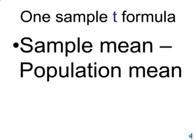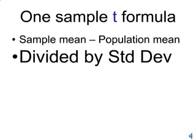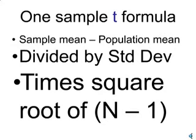Let's look at the one-sample t formula. For the numerator, we take the sample mean minus the population mean. Don't worry if you get a negative number — we can ignore the negative sign because we're going to be using a two-tailed test. We then divide by the standard deviation, preferably of the population, and multiply this quotient by the square root of n minus 1.